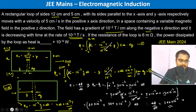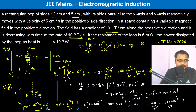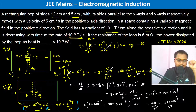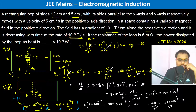To clarify: we included two contributions to the change in flux. First, due to time dt, the magnetic field decreased. Second, because the loop moved V dt, the magnetic field at the loop's new position also decreased by V dt into 10 to the power minus 3 tesla per centimeter. That's how we set up the calculation.